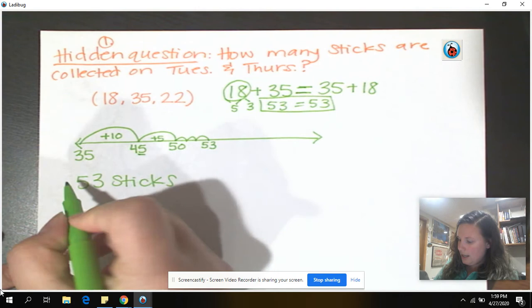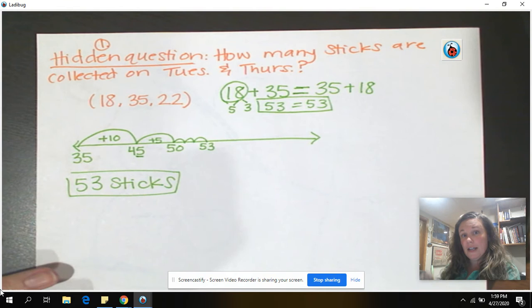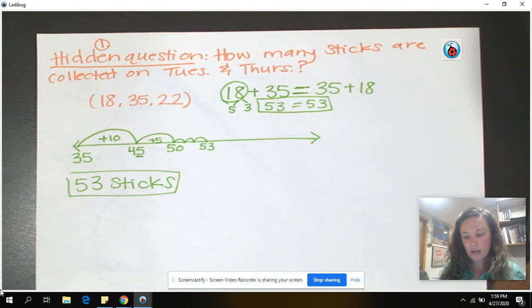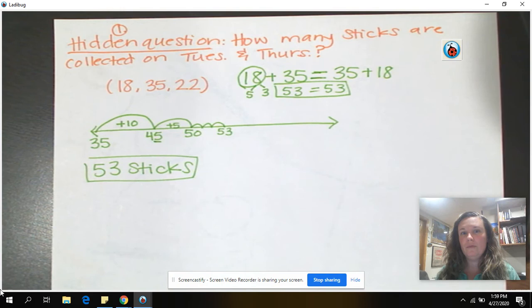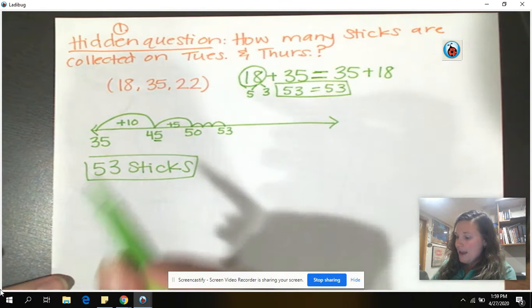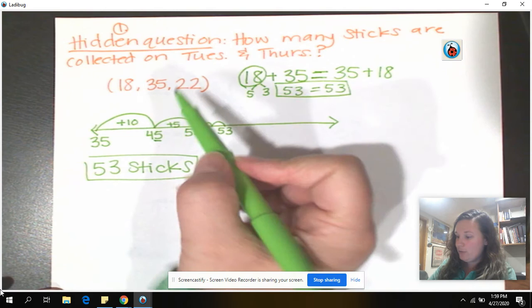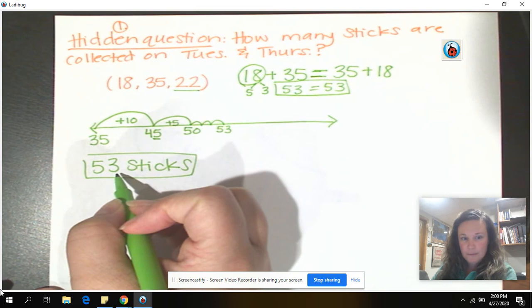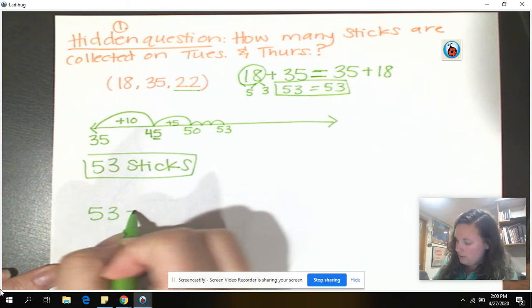All right. So now that we've answered the hidden question, we need to go back to the story problem's question. And the story problem's question is, how many did she have when she got home? Because remember, some fell out of the wagon. And if some fell out of the wagon, that means we lost them. If we lost them, what operation are we going to do? We have to take away because they got taken out of the wagon. So I have 53 sticks. And I want to subtract, look at my number here, 22. So if I have 53 sticks, I want to subtract 22.